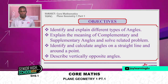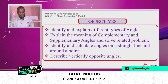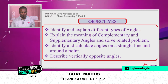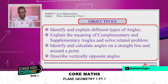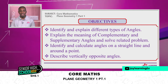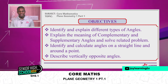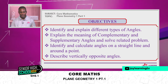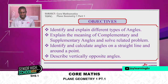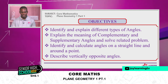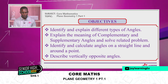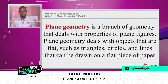For today, we are doing Plane Geometry 1, Part 1. By the end of today's section, you should be able to identify and explain different types of angles, explain the meaning of complementary and supplementary angles and solve related problems, identify and calculate angles on a straight line and angles around a point, and describe vertically opposite angles if time permits.